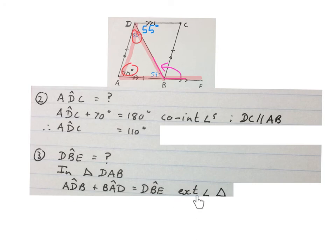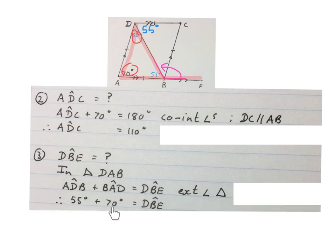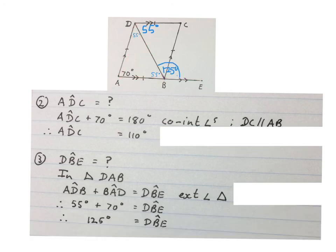So that angle there is equal to that one plus that one. So 55 degrees plus 70 degrees is angle DBE, so angle DBE equals 125 degrees, that we also write in on the sketch.